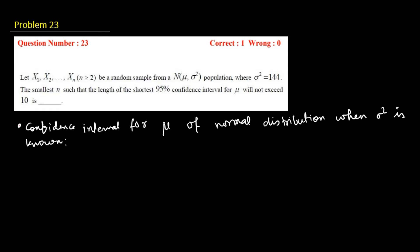So if you know what is sigma square, then you can find out what is the confidence interval for μ from the normal distribution. This methodology only works when you know what is sigma square.